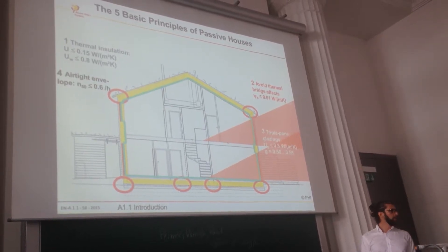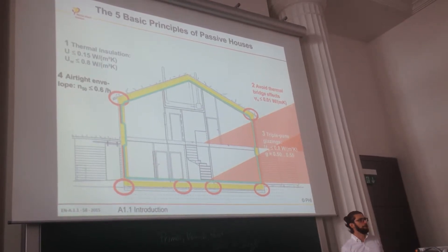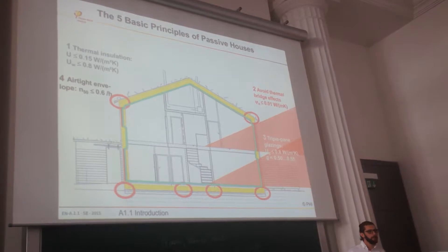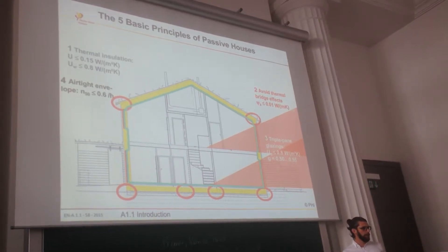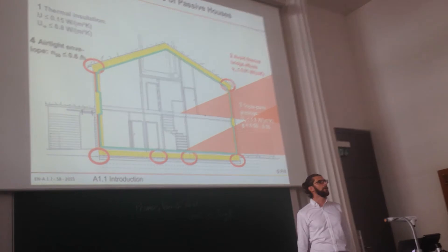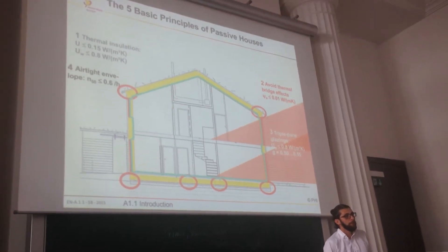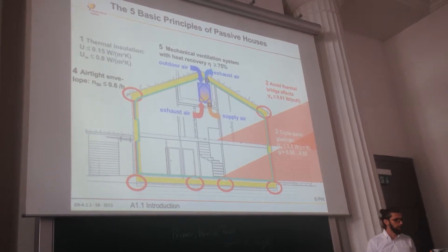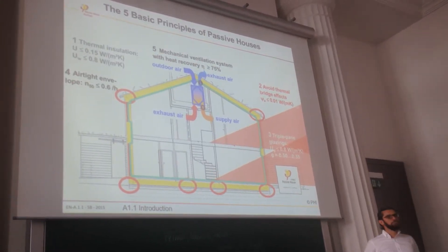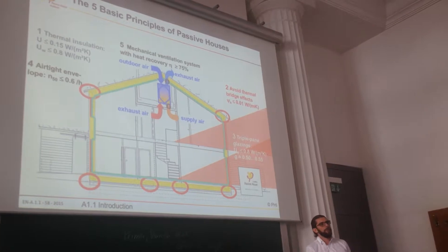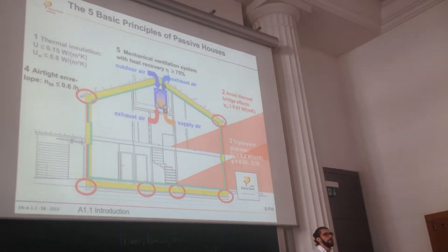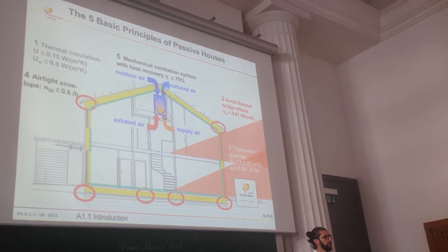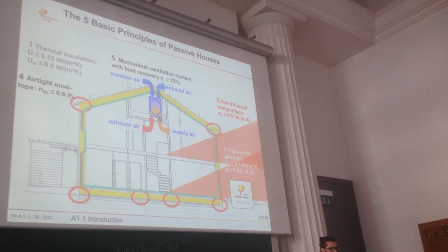Air tightness is measured in the N50 value, which should be below 0.6. In Austria it's below 1 — that will be 1 if you are using ventilation units, to make the ventilation units more efficient. And the ventilation units — you have to optimize and measure them. The heat recovery should be higher than 75%, and the energy demand should not be too high.